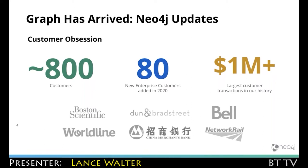Things have been going quite well on many fronts. 2020 was a pretty healthy year for Neo4j. We have accelerated our shift to the cloud and that's going well. We're now over 800 customers. We added 80 large brand name customers. We now have many customers who have relationships with us at the seven-figure level.